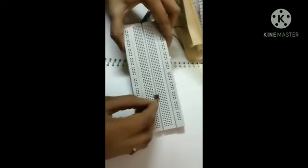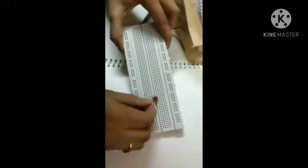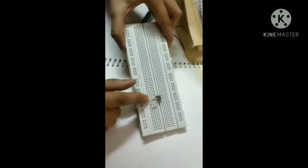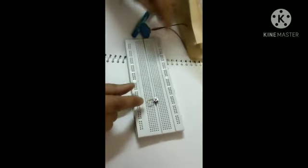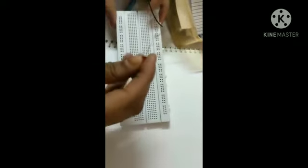Insert it in the same column where you inserted the push button. Both ends of the resistor are connected in the same column like this. After that, you have to insert the anode.